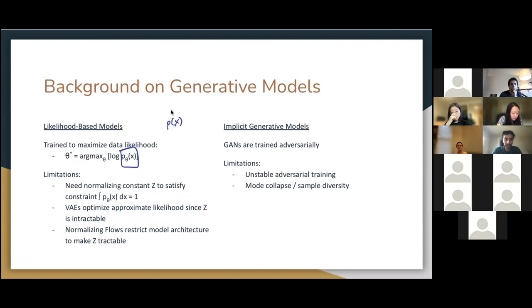VAEs and normalizing flow models have two different solutions to this. So VAEs keep Z intractable, but they deal with this by optimizing an approximate likelihood using a variational lower bound on the likelihood. And normalizing flows, on the other hand, the Z is tractable, but it restricts model architectures in order to keep it tractable. So note here, there's a trade-off between tractability and flexibility. Normalizing flows are a tractable problem but restricted, and VAEs deal with intractable settings but have to use this approximate inference.